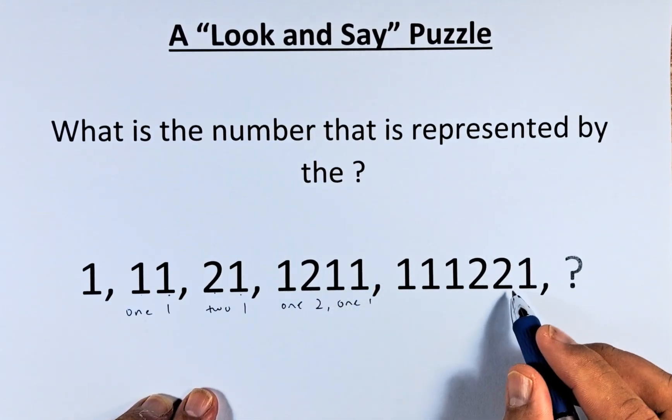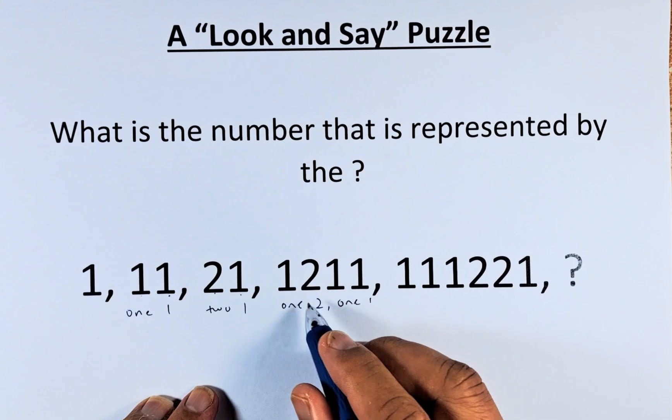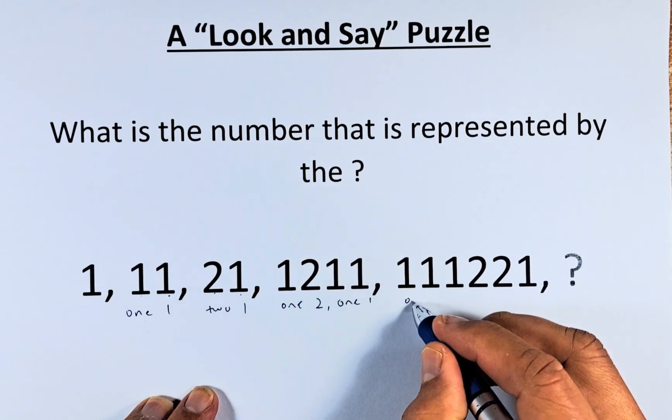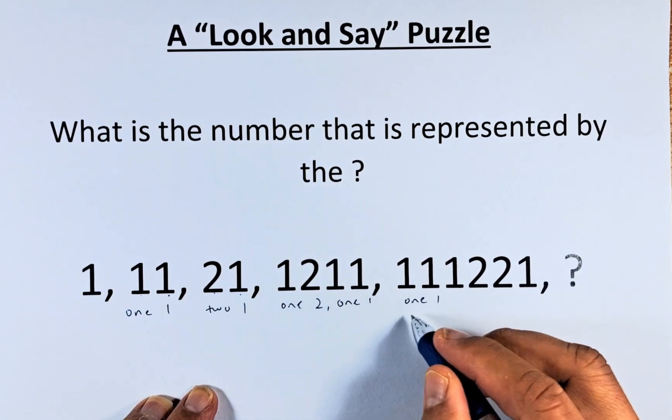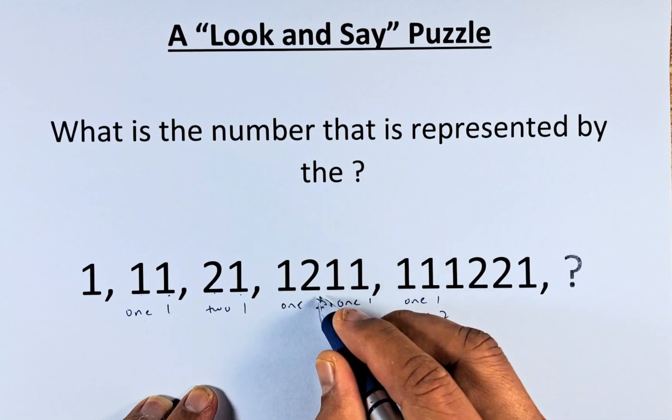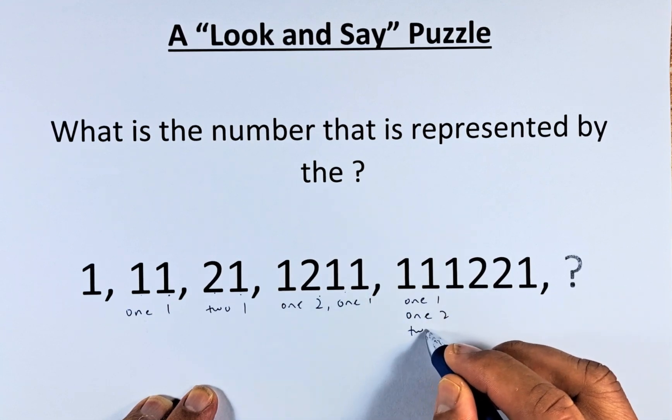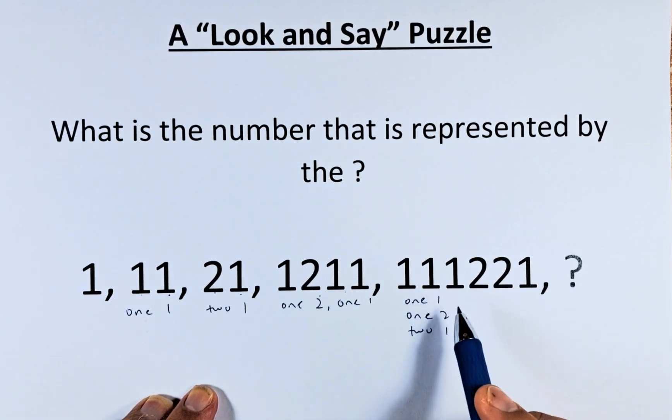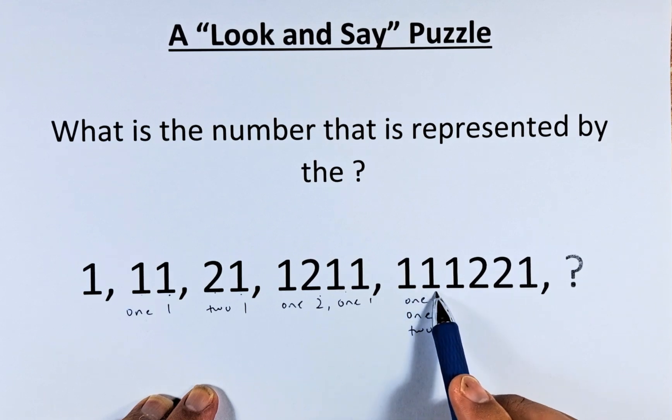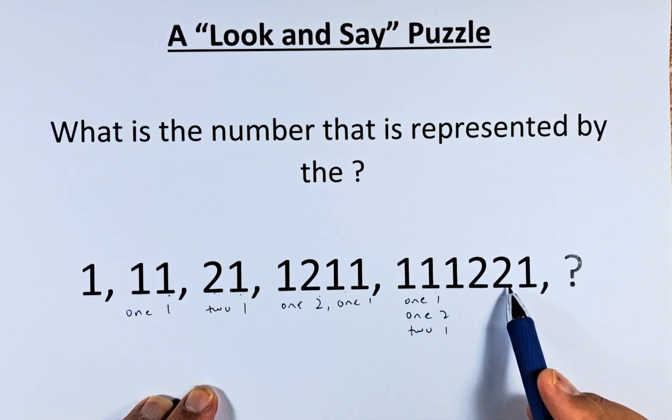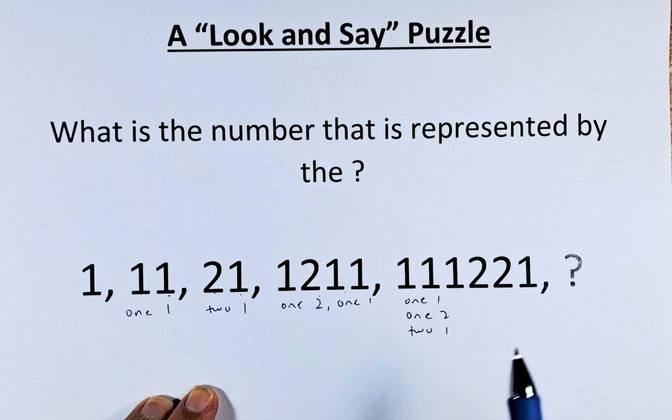And now to the next number. From here, you get one 1, one 2, and two 1s. So you get 111221. You get what I'm talking about?